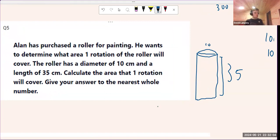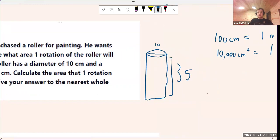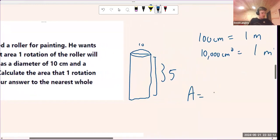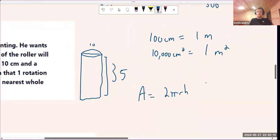Calculate the area that one rotation will cover. Well, if we look at page, I think it's 10 in the logbook, you're going to see the area A of a cylinder is 2πrh. r is going to be half the diameter, which is 5. h we're told is 35. And so we're going to have 2π times 5 times 35.